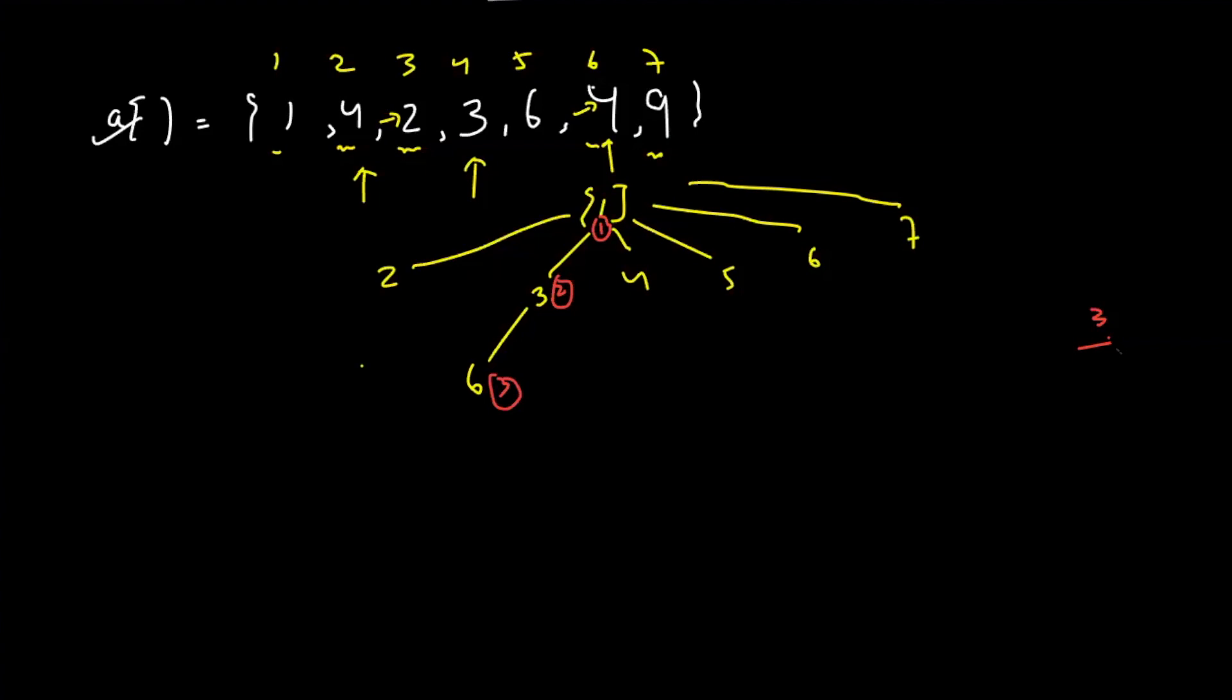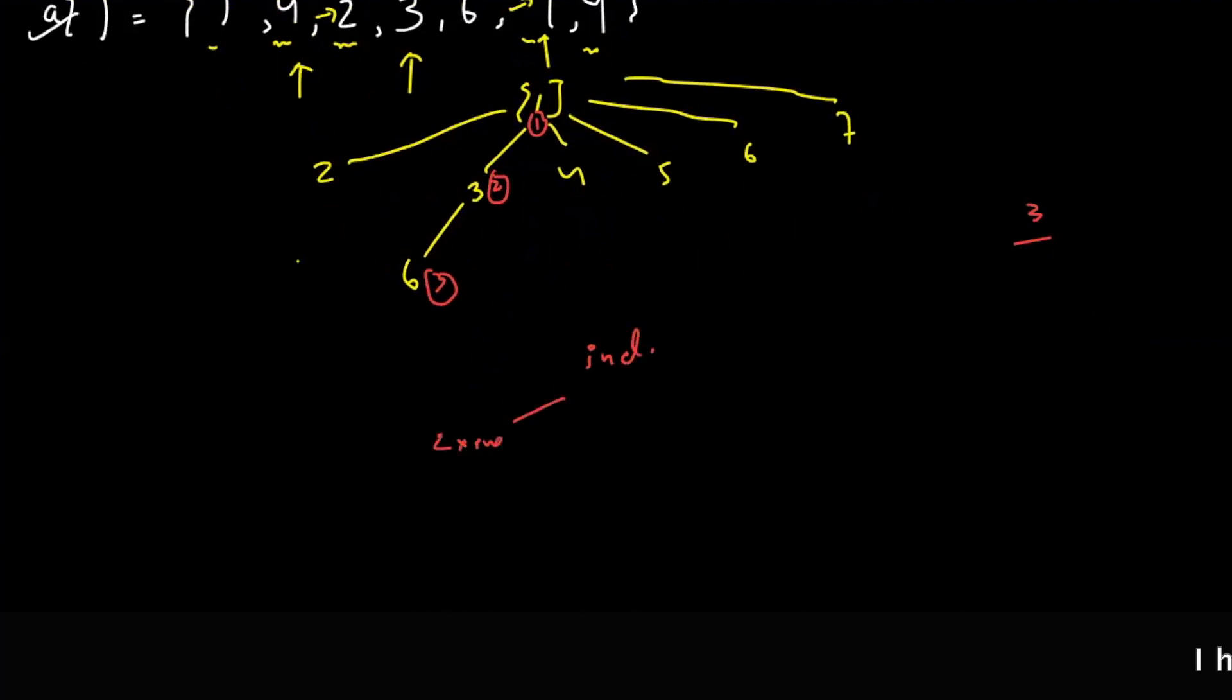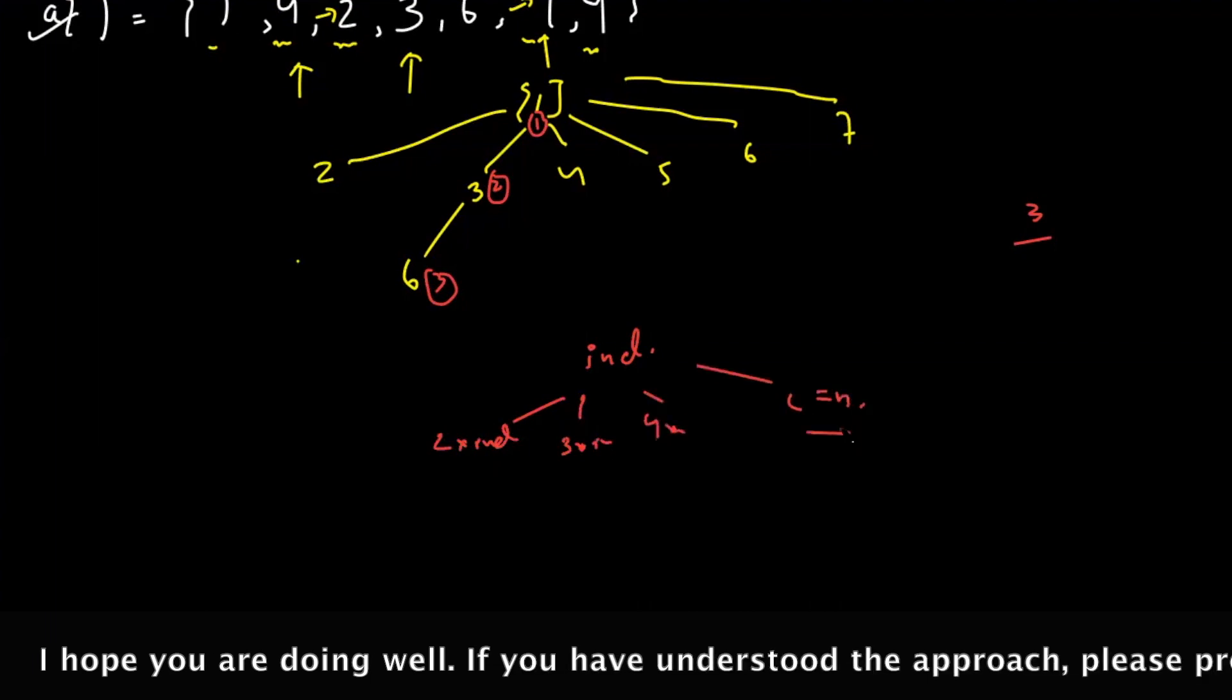Now we need to figure out how can we convert this into recursive code. And once you have done this, you know how to convert recursive code to memoization. If you do not know, check the description, watch the link of the video, come back and start again. So if you're standing at any given index, you're moving to 2 times index, 3 times index, 4 times index, and so on.